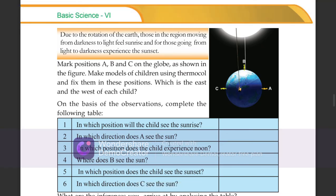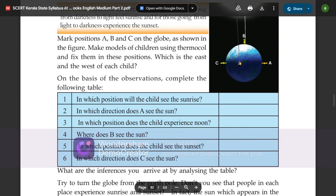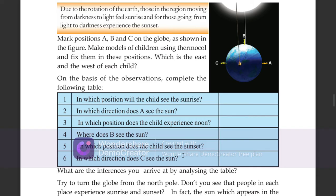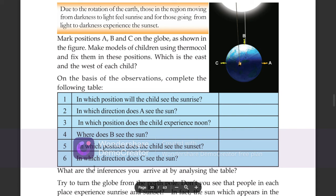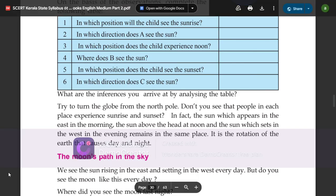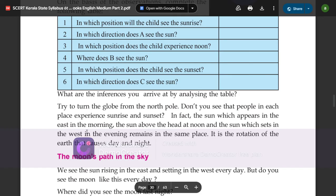In which direction does A see the sun? In which direction does B see the sun? What are the inferences you arrive at by analyzing the table?